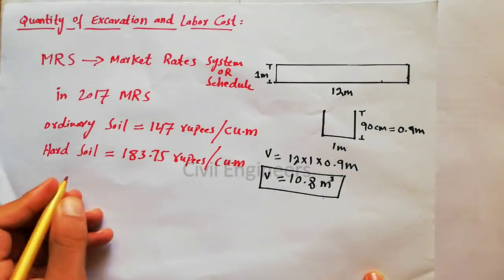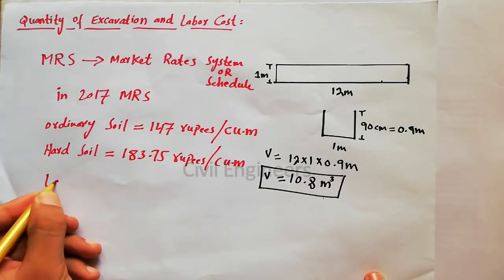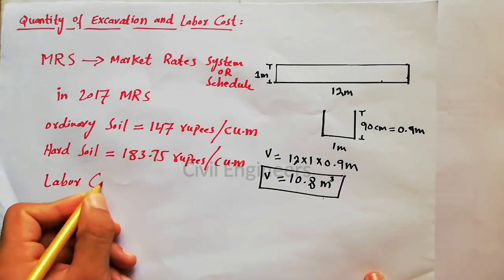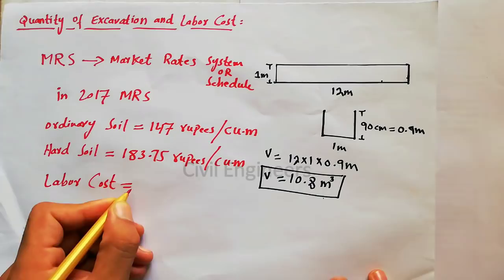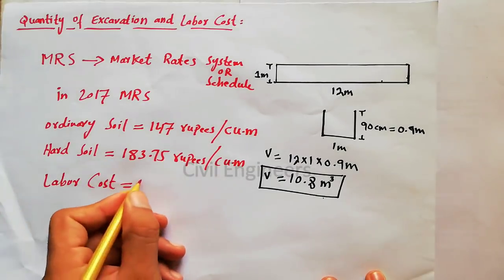So suppose this is ordinary soil. Suppose it's easy for excavation. So what will be the labor cost for this? So labor cost equals 147.